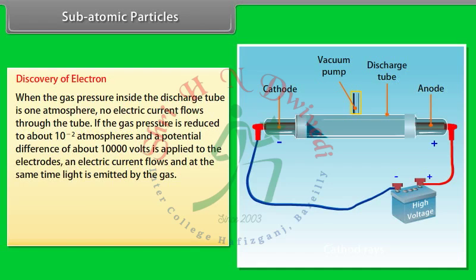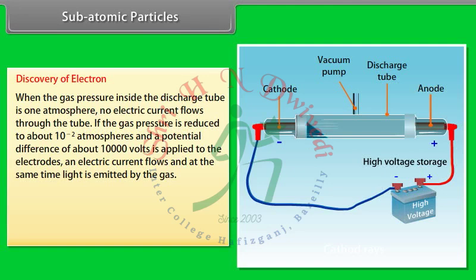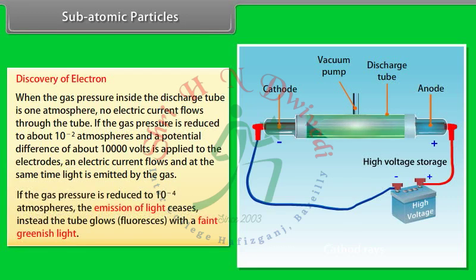When the gas pressure inside the discharge tube is 1 atmosphere, no electric current flows through the tube. If the gas pressure is reduced to about 10 to the power minus 2 atmospheres and a potential difference of about 10,000 V is applied to the electrodes, electric current flows and at the same time light is emitted by the gas. If the gas pressure is reduced to 10 to the power minus 4 atmospheres, the emission of light ceases.